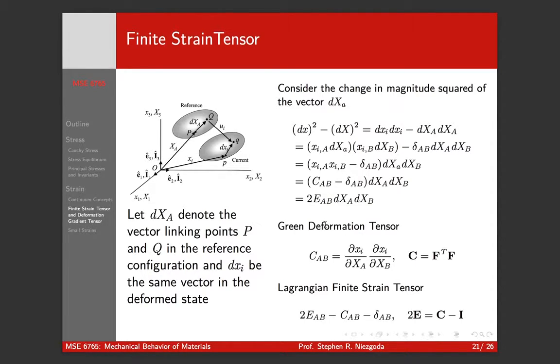In going through this we introduce two tensors: the Green deformation tensor, sometimes called the Cauchy-Green tensor, sometimes mistakenly called the Finger tensor by some people. Basically what this is, is a deformation gradient, so it's really the square of a deformation gradient. F transpose F is how we define this Green deformation tensor and it shows up in our derivation.